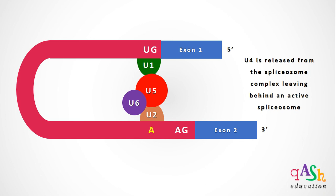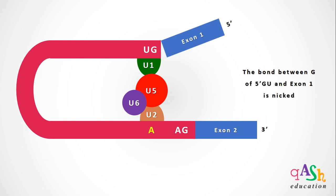This active spliceosome assembly comprises of U1, U2, U6, and U5. The active spliceosome complex now nicks the bond between the guanine residue of the 5' GU splice site and exon 1.